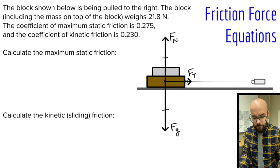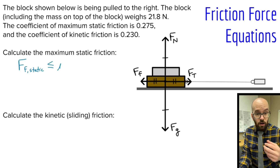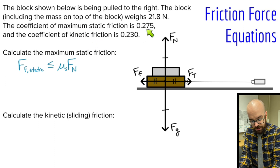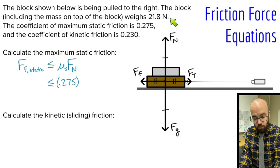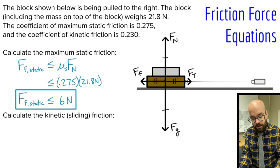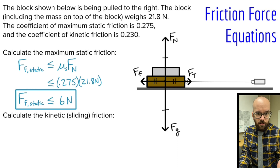Assuming we're pulling at constant speed or the block isn't moving yet, those horizontal forces are balanced and equal in magnitude. So let's calculate the maximum static friction. Writing our static friction inequality: it's less than or equal to mu s times the normal force. I'm looking at static friction, so I use 0.275 times the normal force. It doesn't tell me the normal force directly — it tells me the weight. The force of gravity is 21.8 newtons, which is equivalent to the normal force. So the normal force is also 21.8 newtons. Our force of static friction is less than or equal to 6 newtons. That doesn't mean we always have 6 newtons — it could be anywhere from 0 up to 6. Six newtons is the most I could pull before it would start moving.